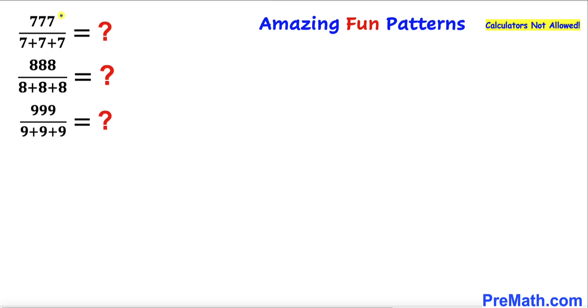The first one is 777 divided by 7 plus 7 plus 7, and likewise we got 8s and 9s. Please don't forget to give a thumbs up and subscribe. Let's go ahead and get started.